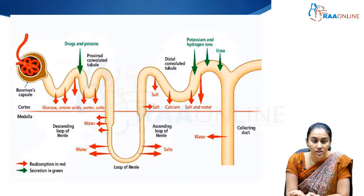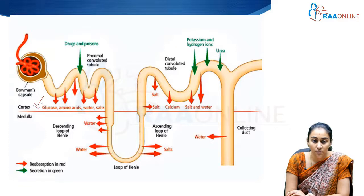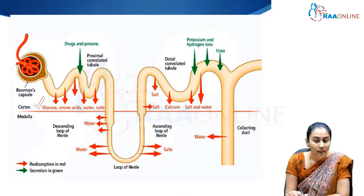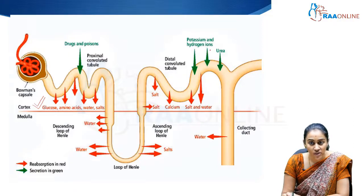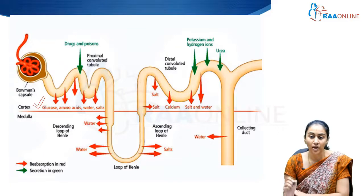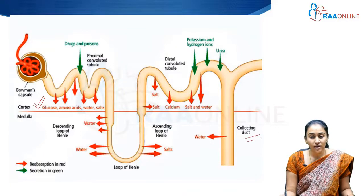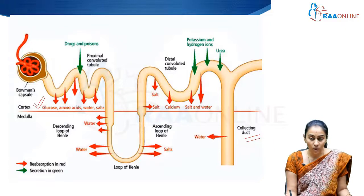As you can see, this is the glomerulus with the Bowman's capsule, and then you have the proximal convoluted tubule — extremely important for reabsorption of glucose, amino acids, water, and salts. Then you have the loop of Henle where reabsorption of water and salts occurs. Then the distal convoluted tubule handles secretion of potassium and hydrogen ions, secretion of urea, and reabsorption of salt, calcium, and water. At the collecting duct level, predominantly water reabsorption occurs.